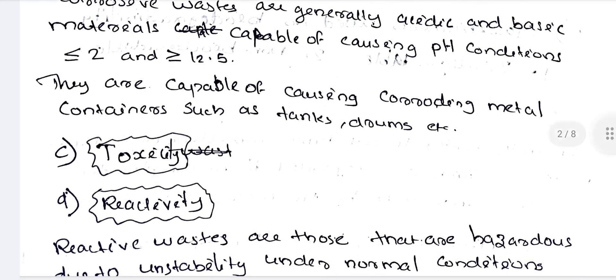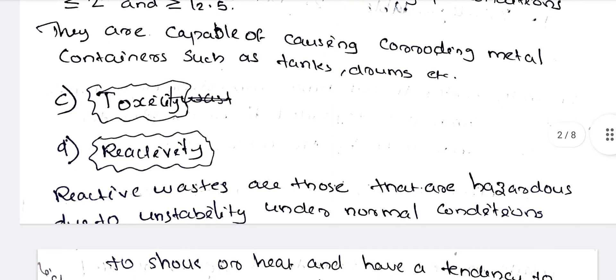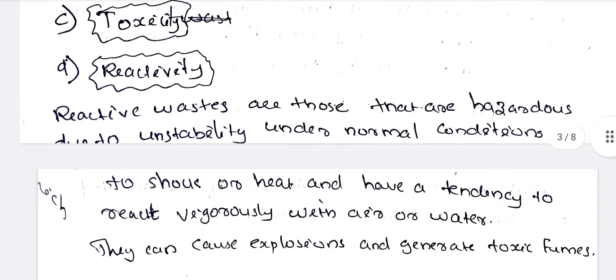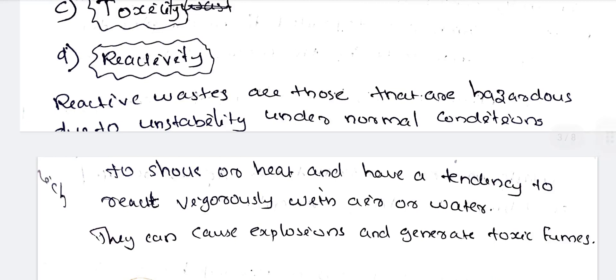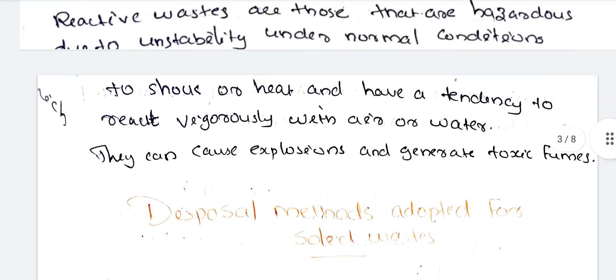Next: toxicity. Toxicity means harmful or toxic substances produced. Next: reactivity. Reactive wastes are those that are hazardous due to instability under normal conditions to shock or heat, and have a tendency to react vigorously with air or water. They can cause explosions and generate toxic fumes.